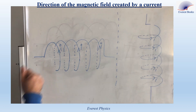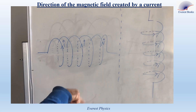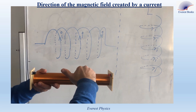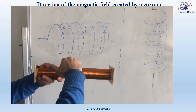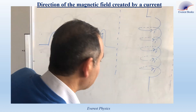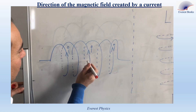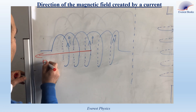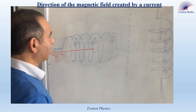The current in the solenoid is as shown. We carry the fingers of the right hand in the sense of the current. The thumb points to the direction of the magnetic field. Using the right hand rule, the magnetic field inside the solenoid is directed horizontally to the left.